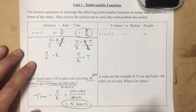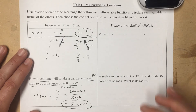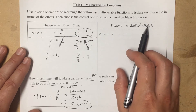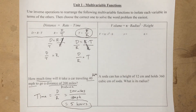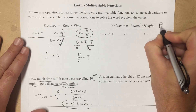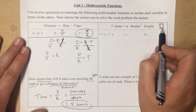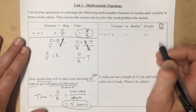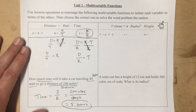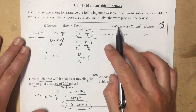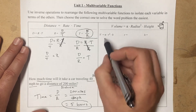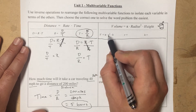Let's look at the second example. Our next equation is: volume equals pi times radius squared times height — V = π·r²·h. This is the equation for the volume of a cylinder. Pi times radius squared gives the area of the top or bottom circle, and multiplying by the height gives the volume. So we're already given this equation and will put it in variable form: V = π·r²·h.